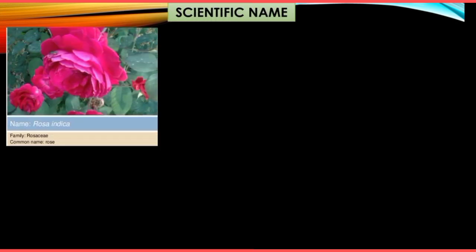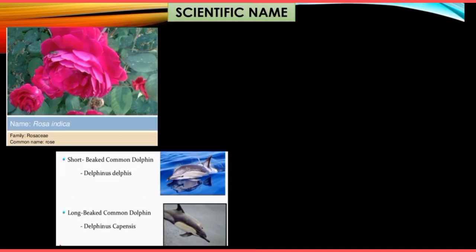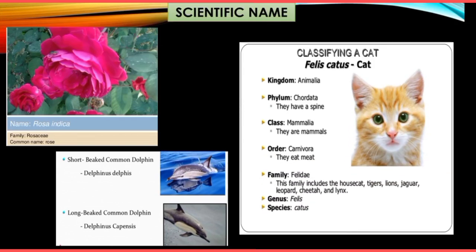Here are some examples of scientific names. A rose has the common name 'rose,' but there are different species — for example, Rosa indica. A short-beaked common dolphin has the scientific name Delphinus delphis, while the long-beaked common dolphin is Delphinus capensis. For a cat, the scientific name is Felis catus — genus is Felis and species is catus. Combining genus and species gives us the full scientific name.